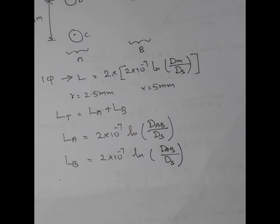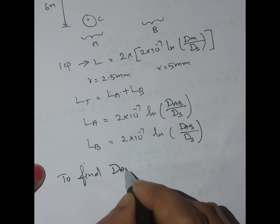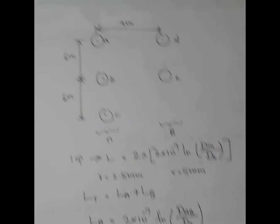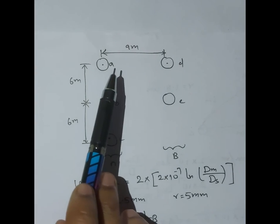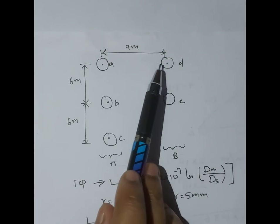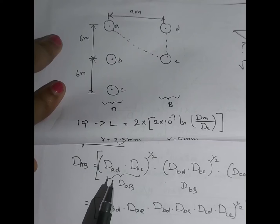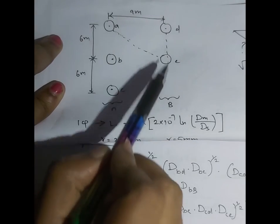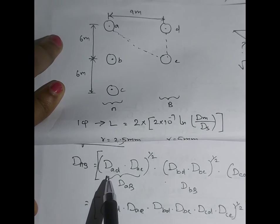Now we have to find Dab. To find Dab: conductor A in phase A can link with conductors D and E in phase B. So we write Dad and Dae — only two distances since there are only two conductors in phase B. The geometrical mean distance means we put a power of 1/2 for those two distances.